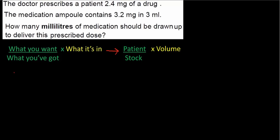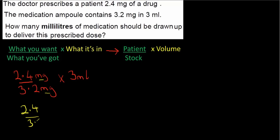Using that formula to unpack the question: the patient dose is 2.4 milligrams; the stock weight is 3.2 milligrams; and the volume is 3 millilitres. I always check the units in the fraction part — in this case both are milligrams, so they're the same and I can proceed. In a year three paper the units may differ and you'd have to convert first.